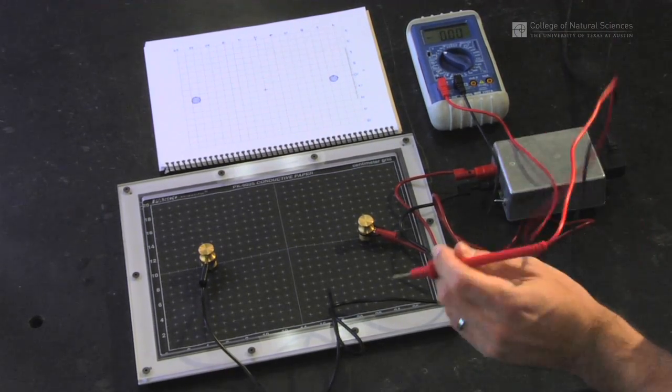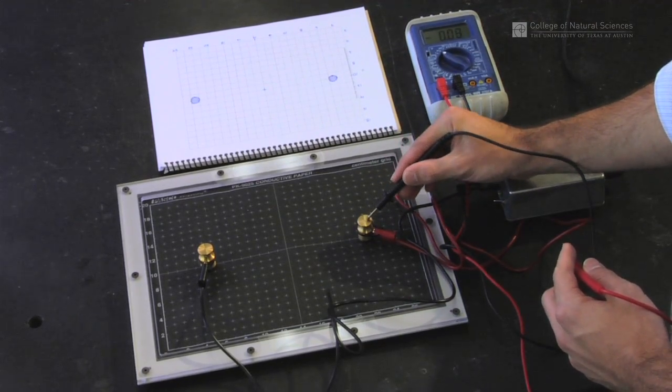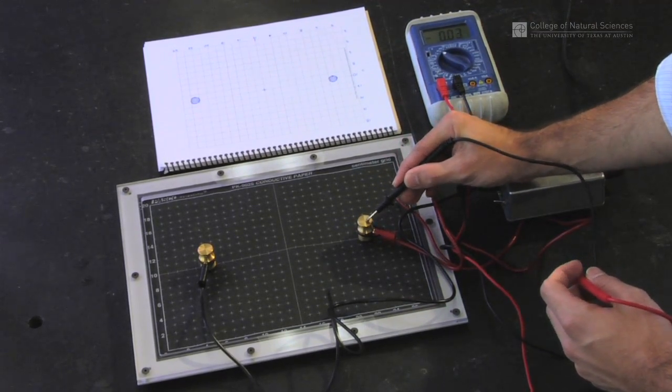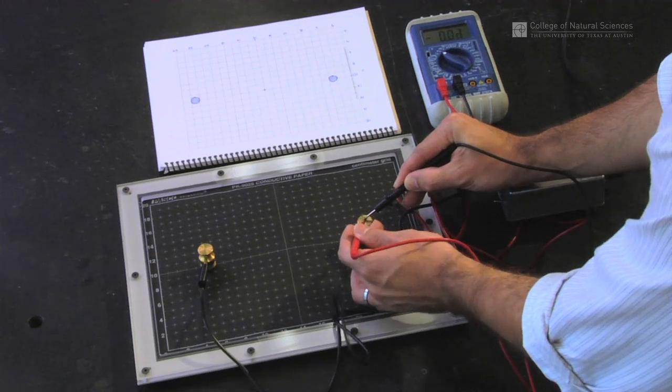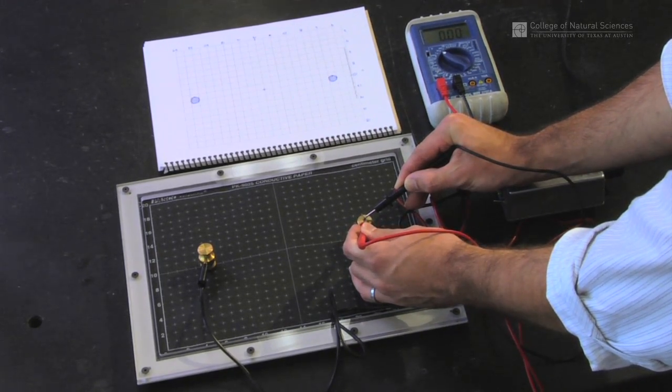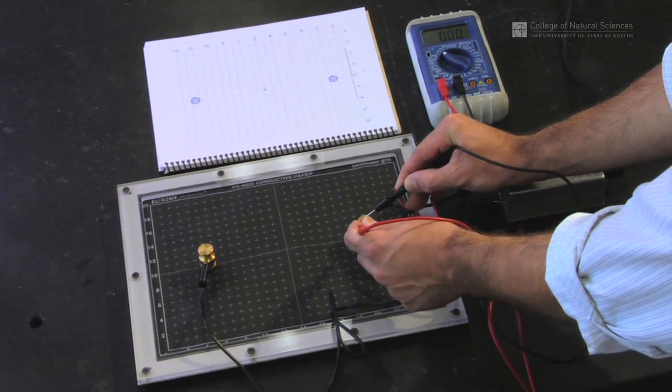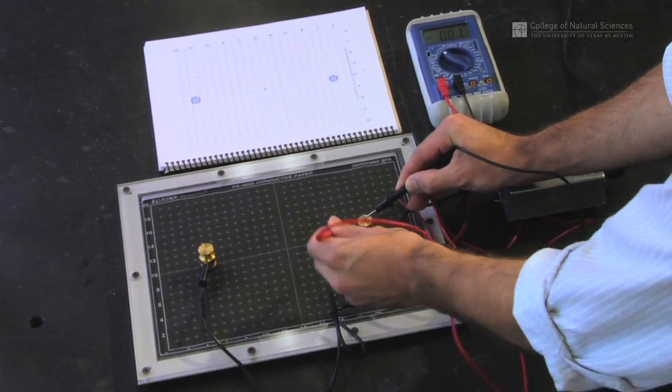We go ahead and take one probe and stick it on the conducting surface. This could be anywhere along the line or the conductor itself. Just to make sure everything is correct, make sure that the voltage across the two reads zero when connected to the same thing.